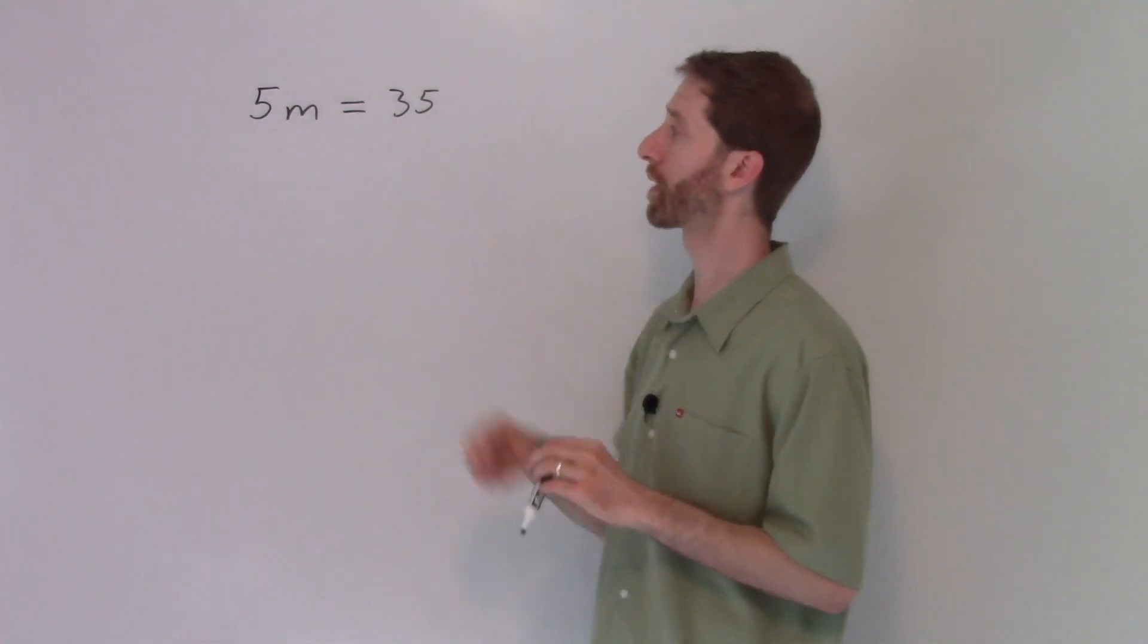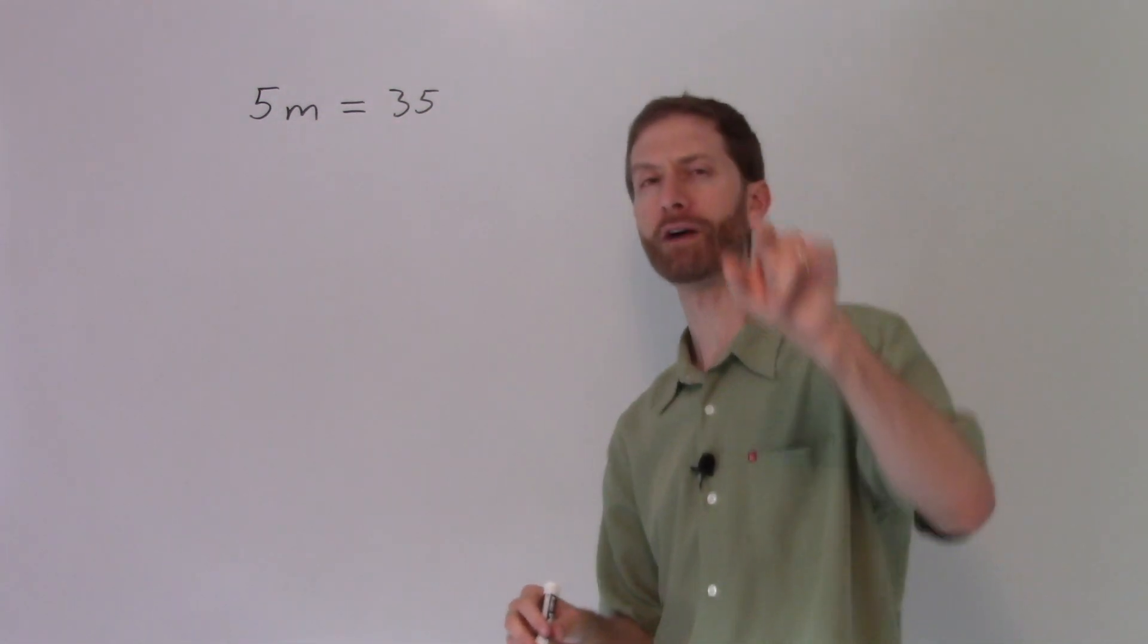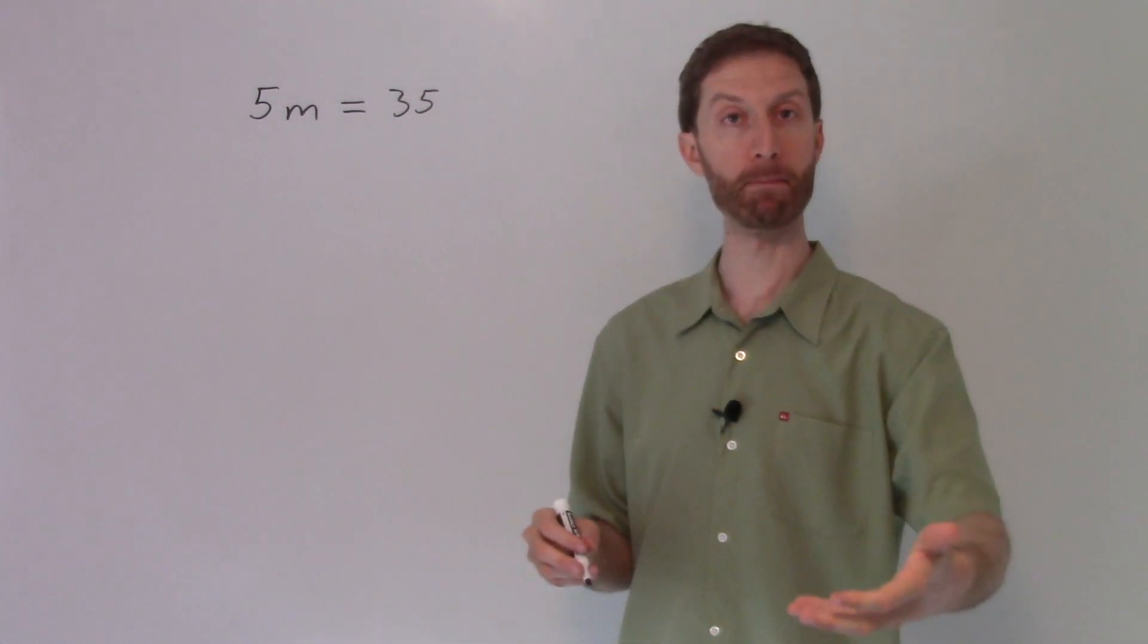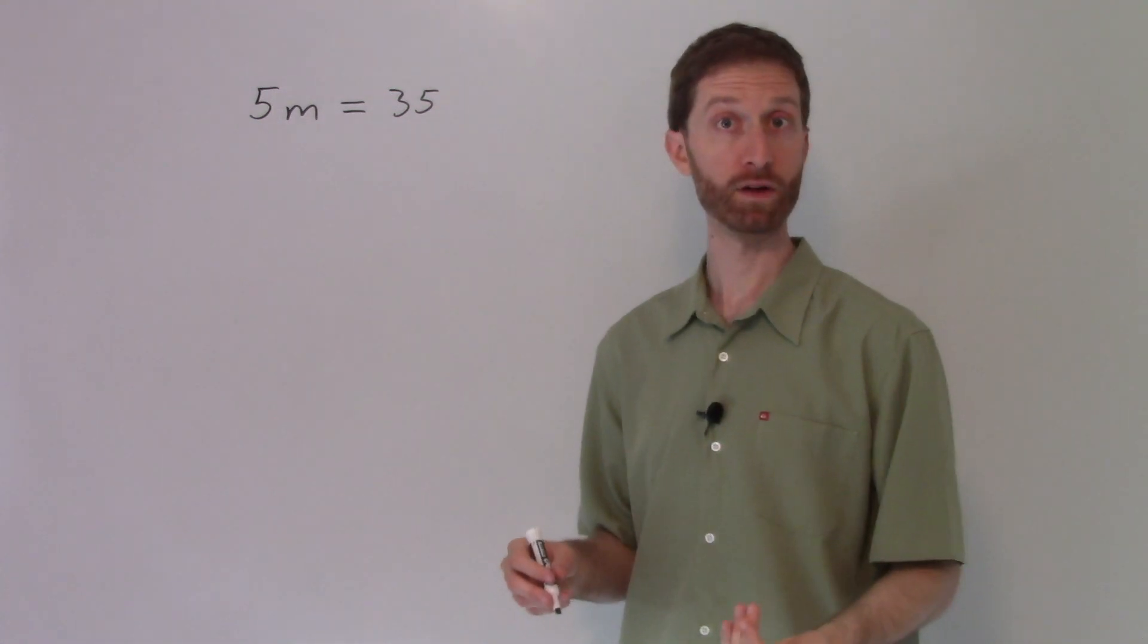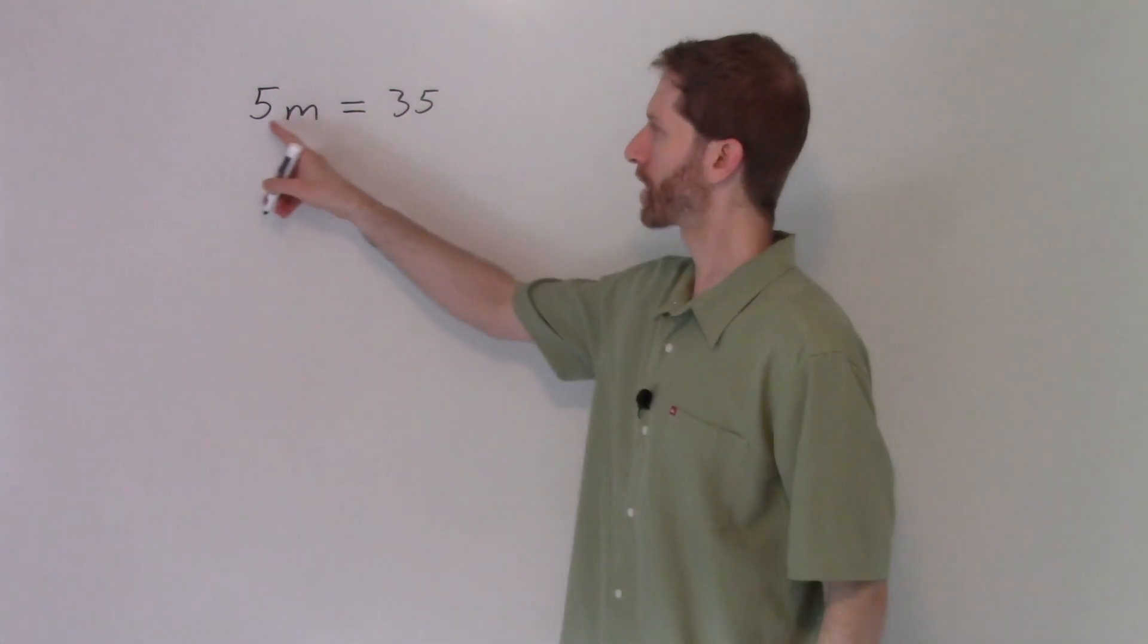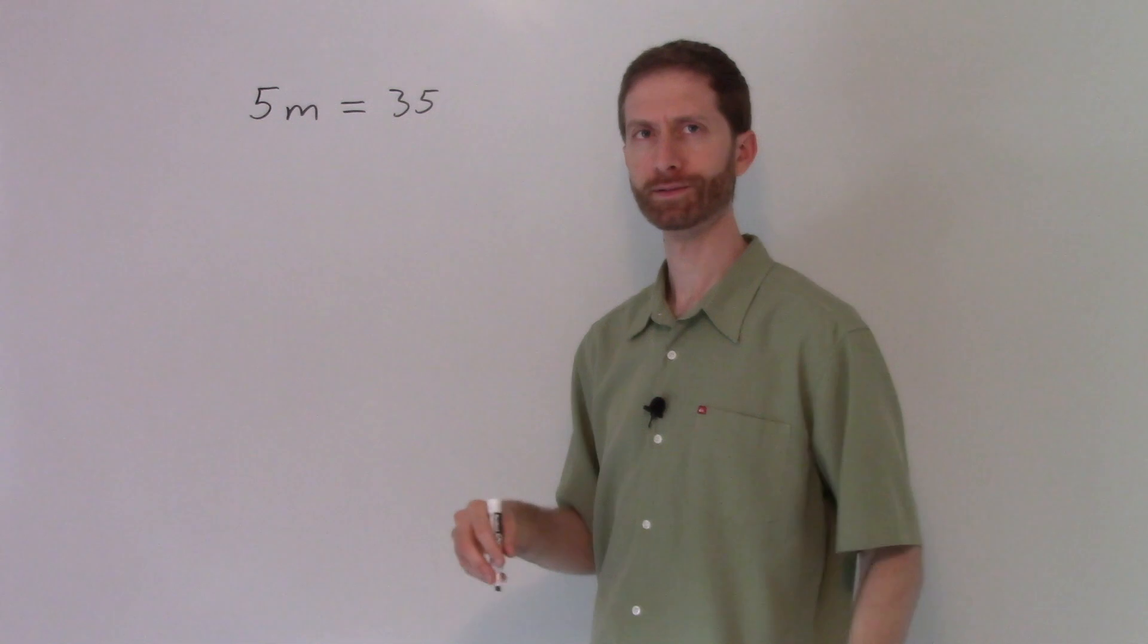So if I look at this problem right here, I'm saying five times some number m equals 35. Well, what number times five gives 35? Seven.